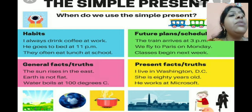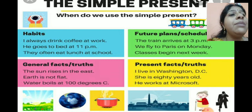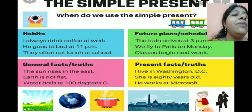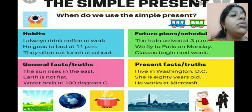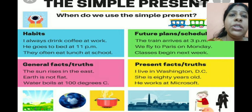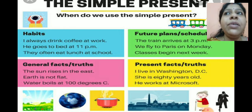Next, when we talk about present facts, we use simple present tense. Like 'I live in Washington D.C.,' 'She is 80 years old,' 'He works at Microsoft.' All these are present facts, and for that also we use simple present tense.